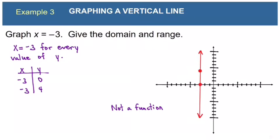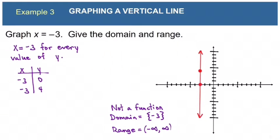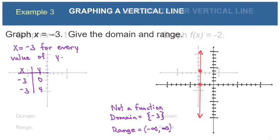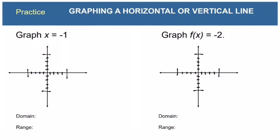The x value negative 3 produces lots of different y values, which violates the definition of a function. But it still has a domain and range. The domain is just the single value negative 3, since that's the only x value in the graph. The range is negative infinity to positive infinity, covering all y values.